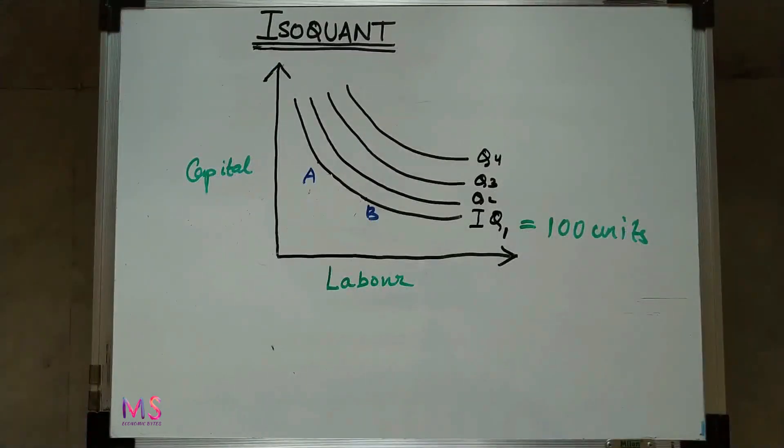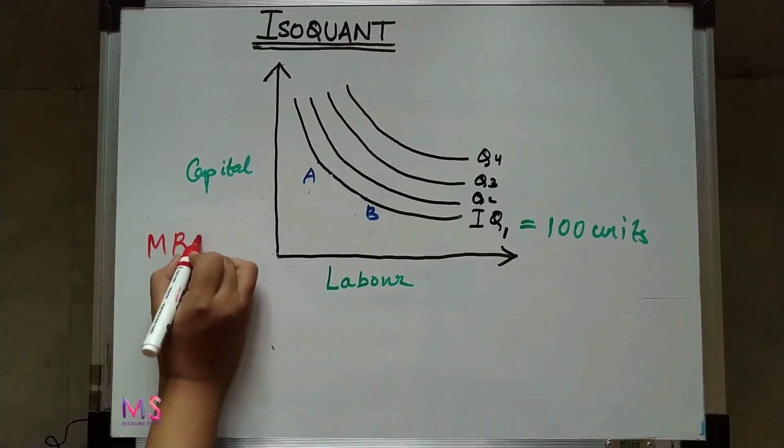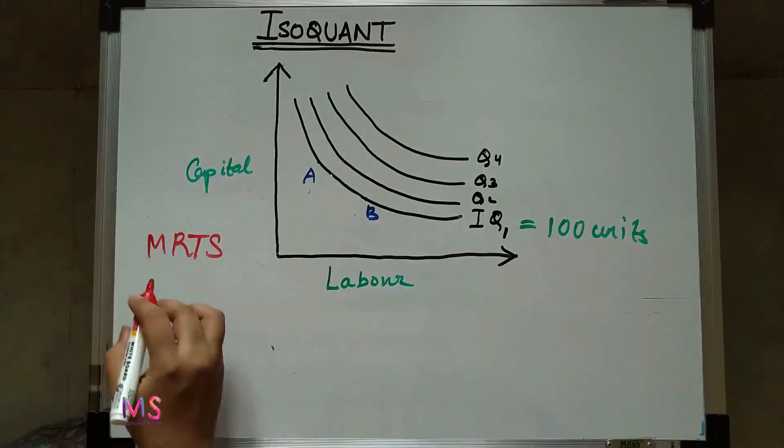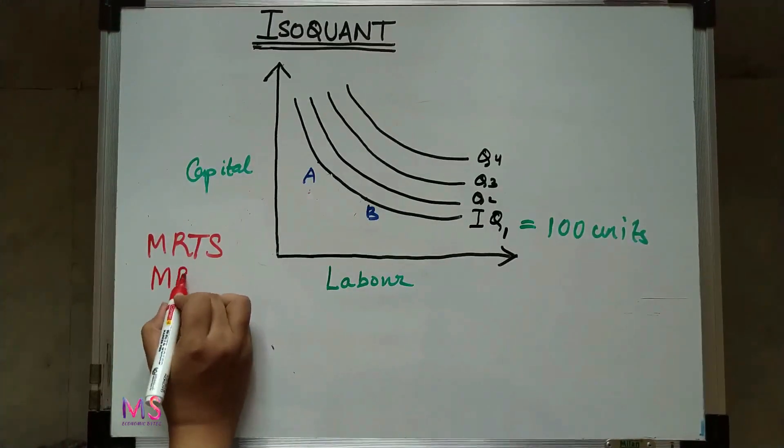A very important concept related to isoquant is its slope. The slope of isoquant is known as the marginal rate of technical substitution, which we also write as MRTS. It is very similar to the concept of MRS, which is the slope of the indifference curve.